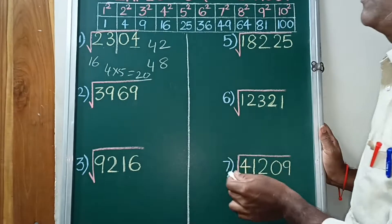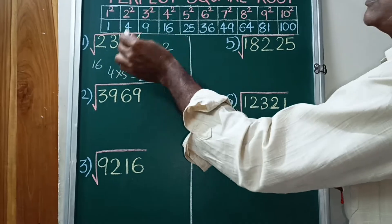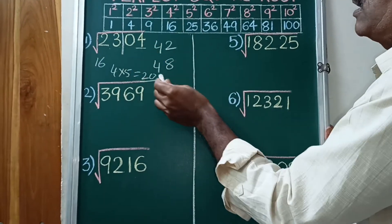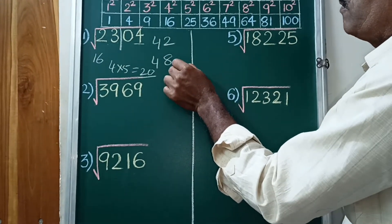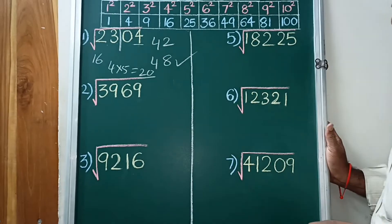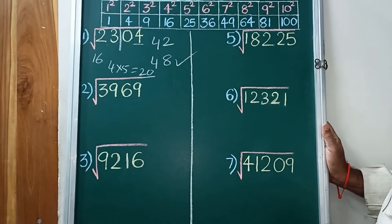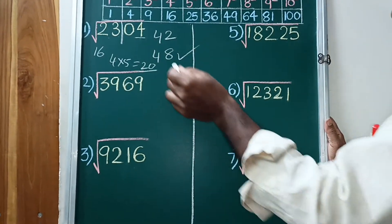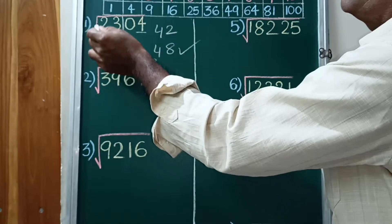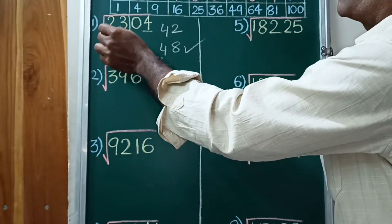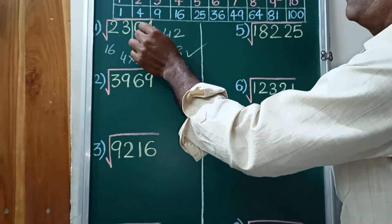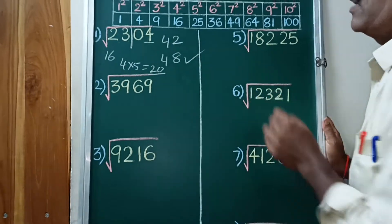Therefore, the square root of 2304 equals 48.